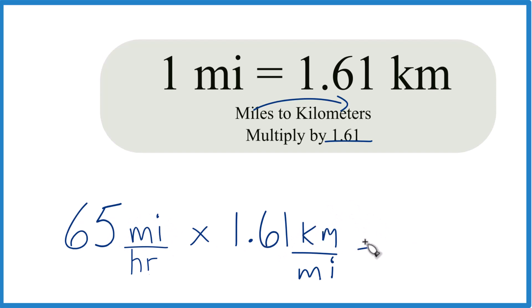65 times 1.61, that equals 104.7. That's rounded a little bit.